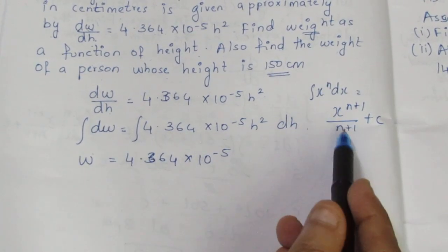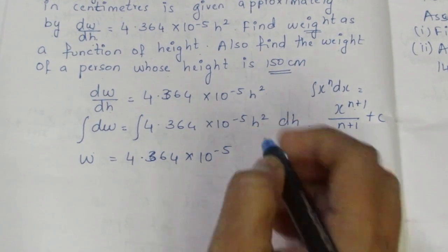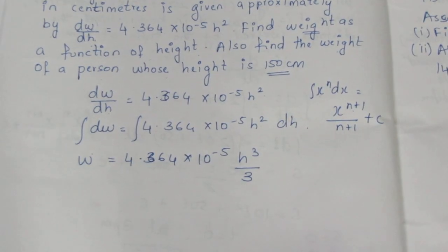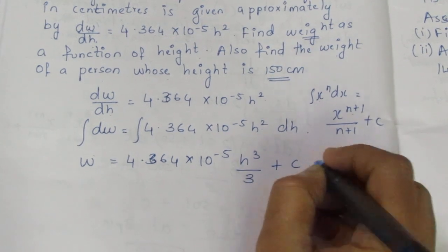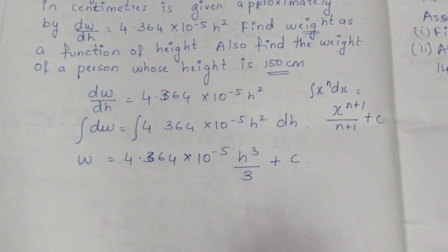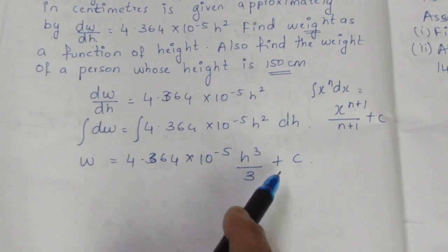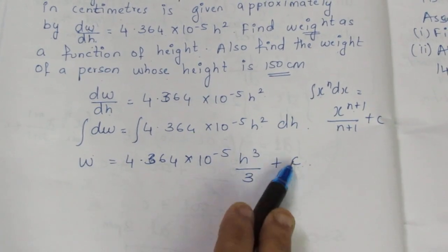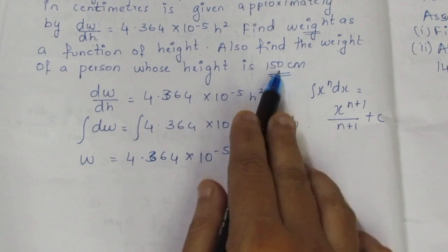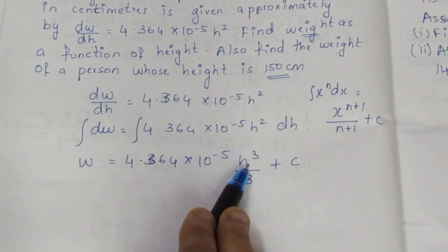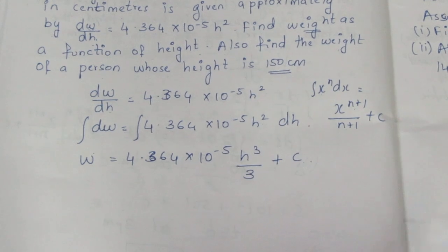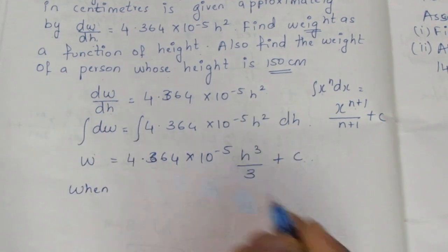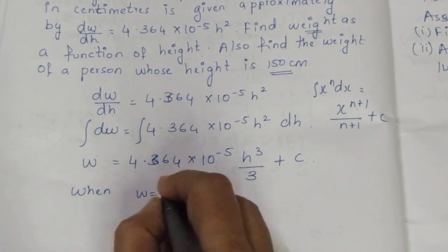Integrating both sides, the power of H increases: H² integrates to H³/3. So W = 4.364 × 10⁻⁵ × H³/3 + C. We have a constant C to solve for. To find C, we can substitute known values — when height is 0, weight is 0.